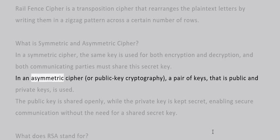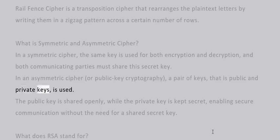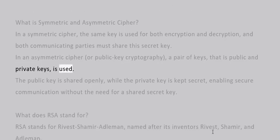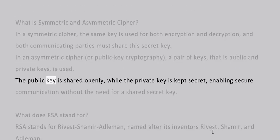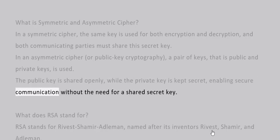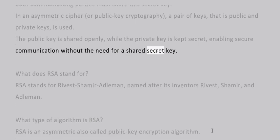What is an asymmetric cipher? In an asymmetric cipher, or public key cryptography, a pair of keys — a public key and a private key — is used. The public key is shared openly while the private key is kept secret, enabling secure communication without the need for a shared secret key.